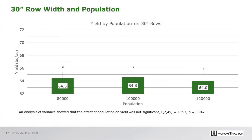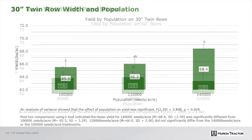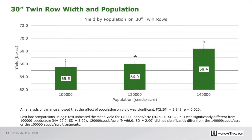Looking at the 30-inch rows now: the left column has 80,000 seeds per acre, the center 100,000, and the right 120,000 seeds per acre. Again, there was no statistically significant yield boost to increasing our soybean planted population.